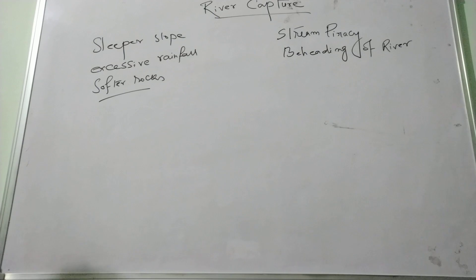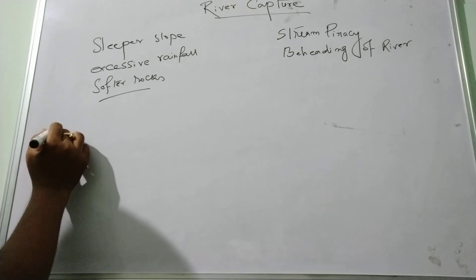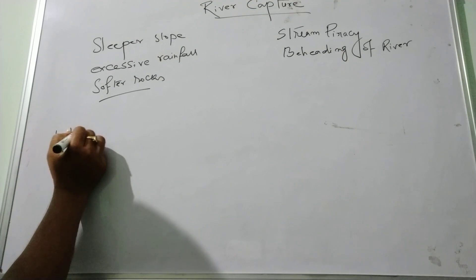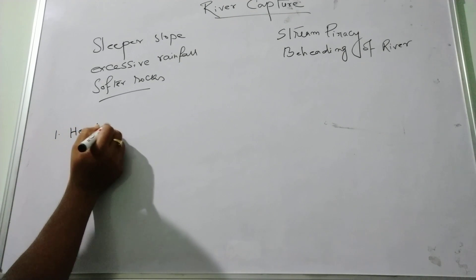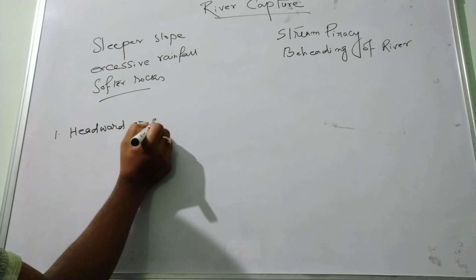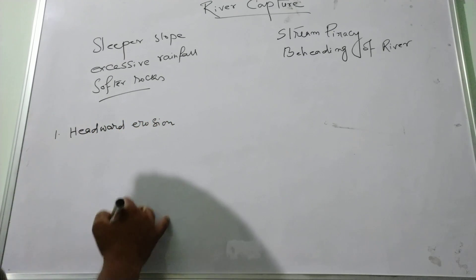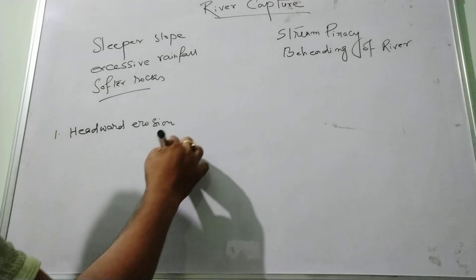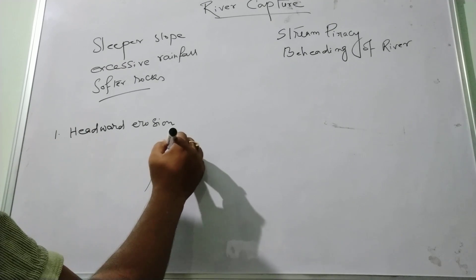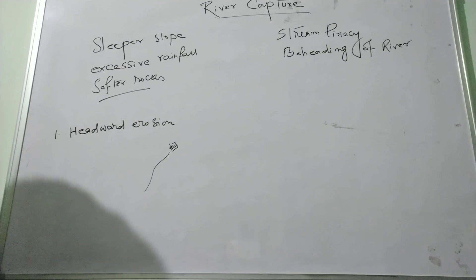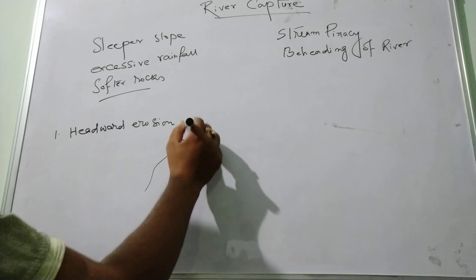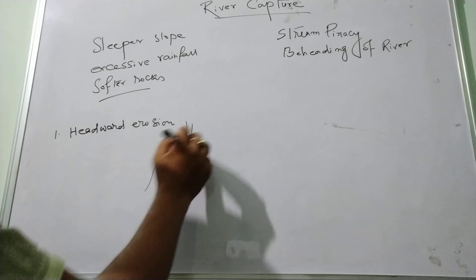River capture generally occurs in three forms. First, it is caused due to headward erosion. When the river is flowing and softer rocks are found, it can erode the softer rocks at the youthful stage of the river towards its source and mix with the master consequent stream or master stream.